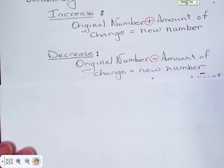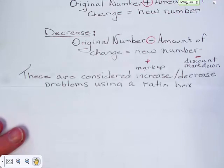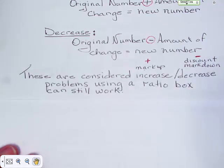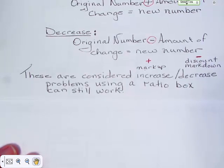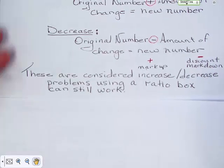Now that's a lot of words, so let's see if we can maybe put it into something that makes a little more sense to you. These are considered markup, markdown problems or increase, decrease, discount, those kind of problems. And you basically will be using ratio boxes to set these up to make them easier to work.